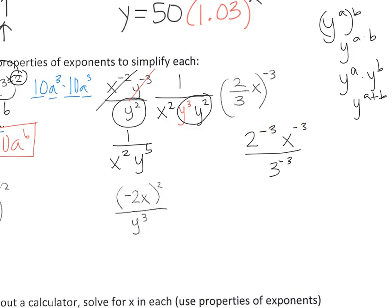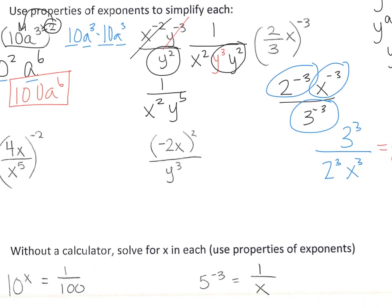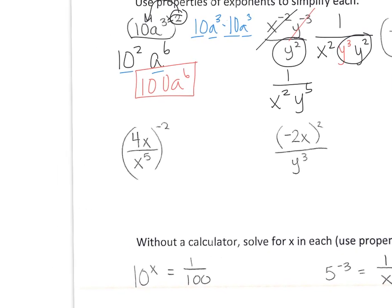The next one: with these parentheses, you need to take everything to the negative 3rd power. So I do 2 to the negative 3rd, x to the negative 3rd, all over 3 to the negative 3rd. When you have negative exponents, you need to move them. 2 to the negative 3 is on the top, so it goes to the bottom. 3 to the negative 3rd is on the bottom, so it goes to the top and becomes a positive exponent. Then at the end you can simplify: 3 to the 3rd is 27, 2 to the 3rd is 8, and then x cubed stays as it is.